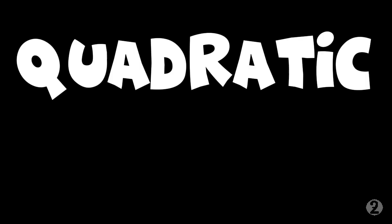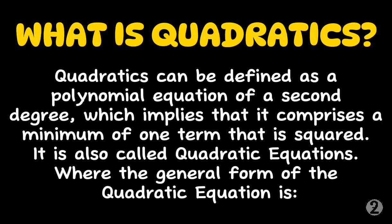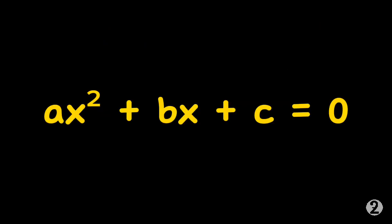Today we are going to talk about the quadratic equation. Let's first get to know what is quadratics. Quadratics can be defined as a polynomial equation of a second degree which implies that it comprises a minimum of one term that is squared. It is also called quadratic equations where the general form is ax² + bx + c = 0.